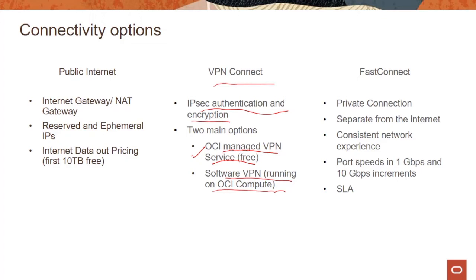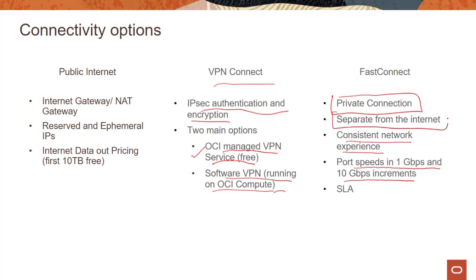The third option we have is FastConnect. FastConnect, as the name specifies, gives you consistent, fast network performance, and you can get supported speeds of 1 Gbps and 10 Gbps increments. The whole idea of FastConnect is that it is a private connection — think about this as having your own high-occupancy vehicle lane on the internet, so your traffic doesn't go through the public internet. You get your own private dedicated connectivity. You can go 10 Gbps and even higher if you want, and of course there's an SLA around that.